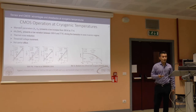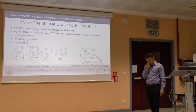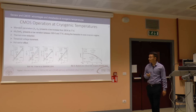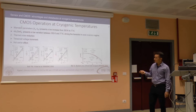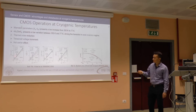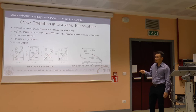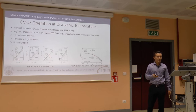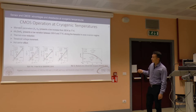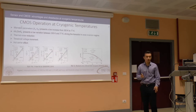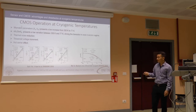I'm going to talk about the cryogenic operation characterization in order to design the front-end electronics. First, we discuss the mismatch parameter. This figure shows the variation of mismatch between 300 Kelvin and 77 Kelvin. When this parameter is due to threshold voltage mismatch, it shows a low — almost negligible — variation at 77 Kelvin.